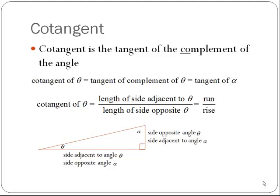The cotangent is the tangent of the complement of the angle, just as the cosine was the sine of the complement of the angle. So the cotangent of angle theta is the tangent of the complement of theta. In a right triangle, theta and alpha are complementary because they sum to 90 degrees, so the cotangent of theta is the same as the tangent of alpha. Therefore, cotangent of theta is the length of the side adjacent to theta divided by the length of the side opposite theta — the run divided by the rise. This might seem strange, but the Egyptians had a function called the seqt function that was very similar to this cotangent.